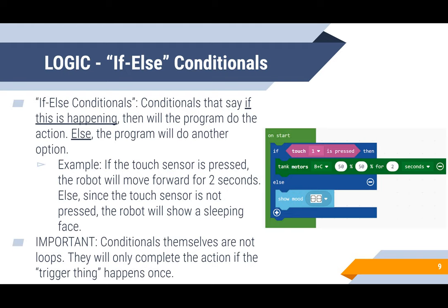That's essentially what is happening in the picture to the right. Notice that the condition in this statement is if the touch sensor is pressed — that pink diamond right there is the condition. Keep in mind that manipulating the sensors can often be a condition that you can have in your logic or even loop, like the while loops.